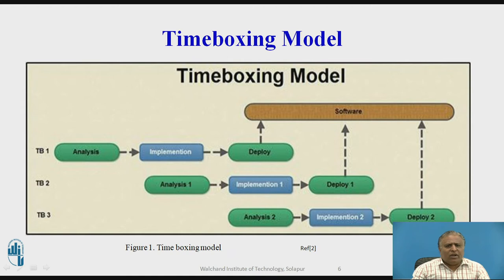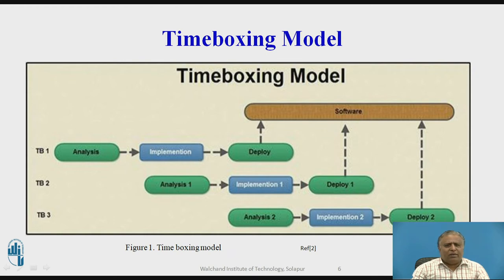Parallel activities can be carried out, with individual teams working in every time boxing frame activity. After completion of the analysis work of TB1, the analysis work of TB2 can be started. The implementation work of TB2 also starts at that point. After TB2's analysis is finished, the TB3 framework work can be started. So parallel working is done using time boxing frames TB1, TB2, and TB3, allowing the software to be developed using parallel activity.